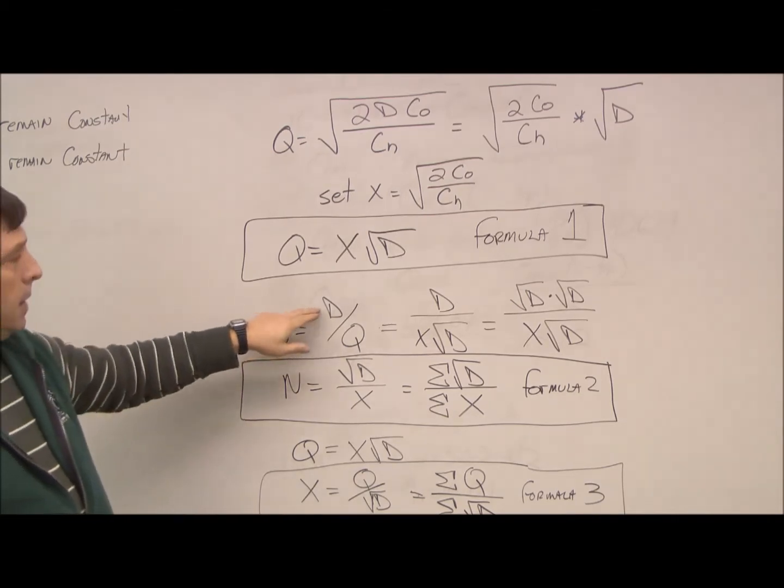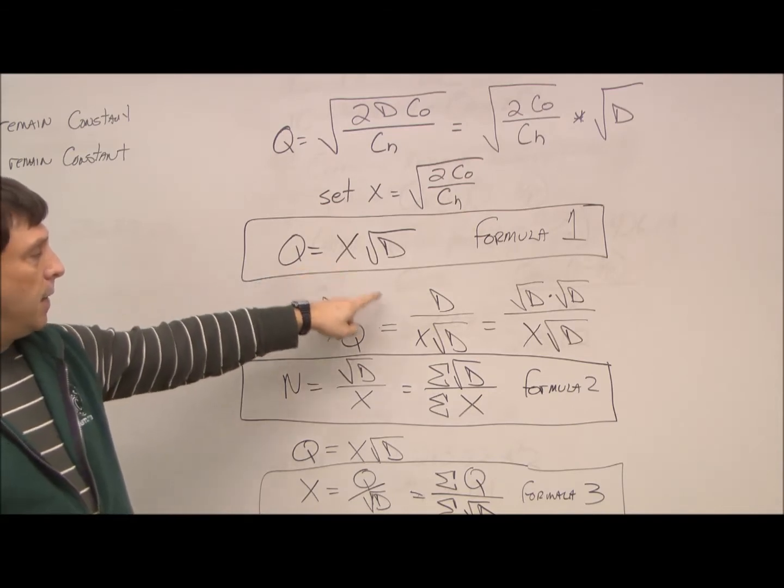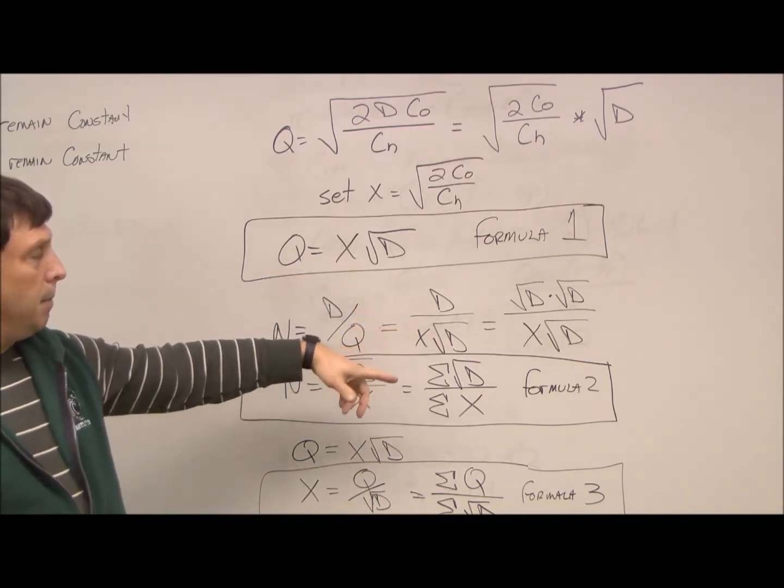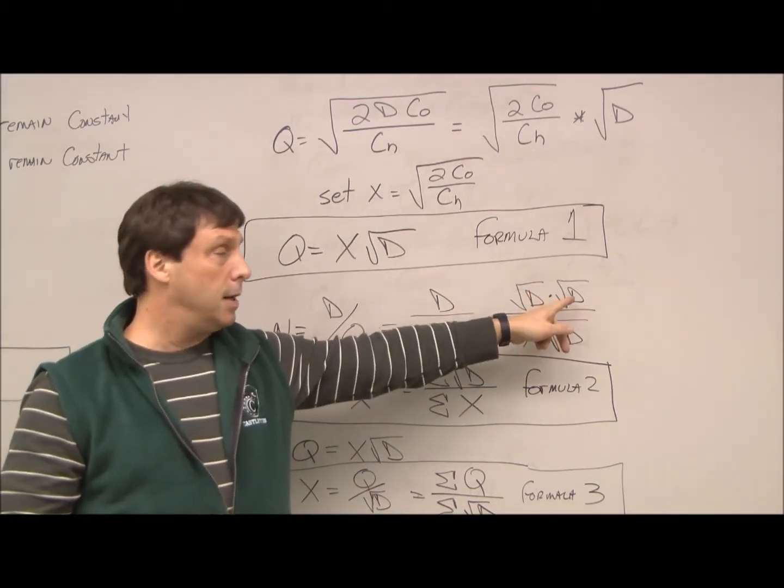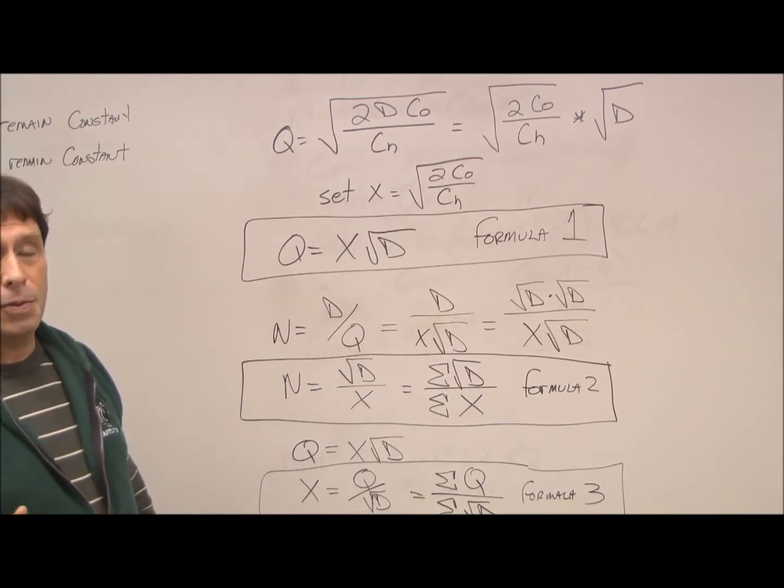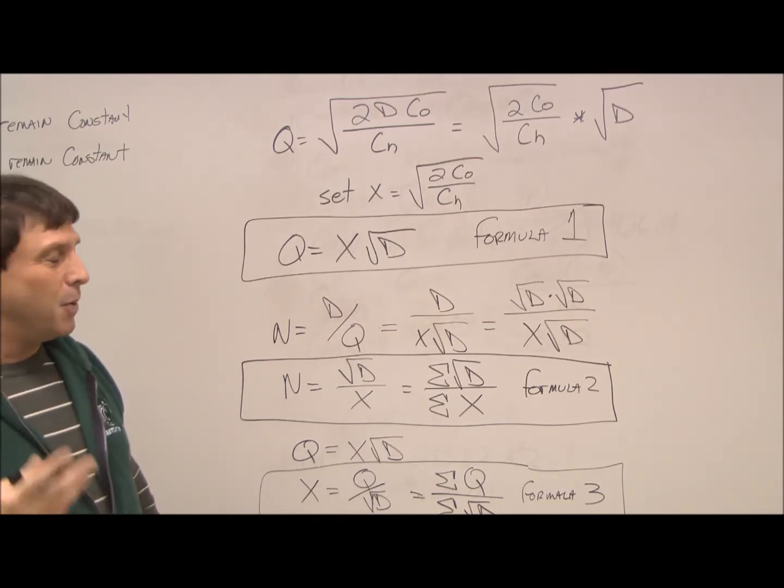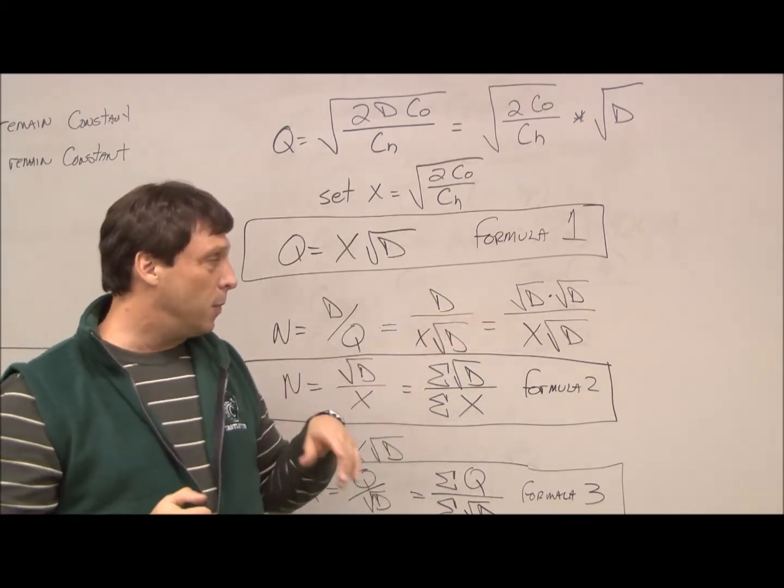We know that N is D divided by Q, but we just said Q is X times square root of D, so this is D over X times square root of D. Another way to write D is D times square root of D times square root of D, just like if you took the square root of 2 times the square root of 2, I mean square root of 4 times the square root of 4, you know, that's 2 times 2 and would equal 4.